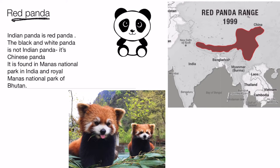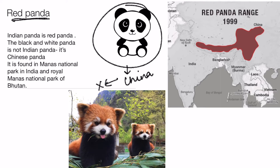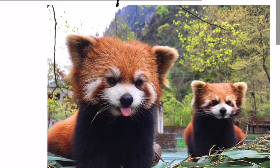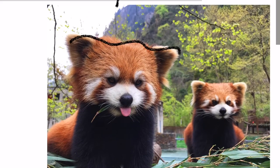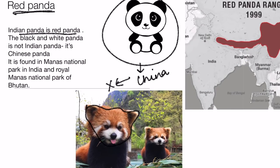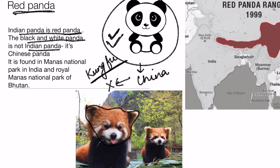The next species is the red panda. The red panda is different from the black and white panda. The black and white panda is found only in China, not in India. India's panda is the red panda. This cute animal is India's panda. The black and white panda you've seen in Kung Fu Panda — even the name Kung Fu tells you it's based on a Chinese concept. That black and white panda is Chinese, not Indian.